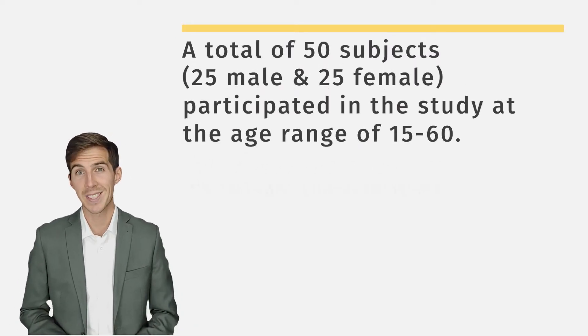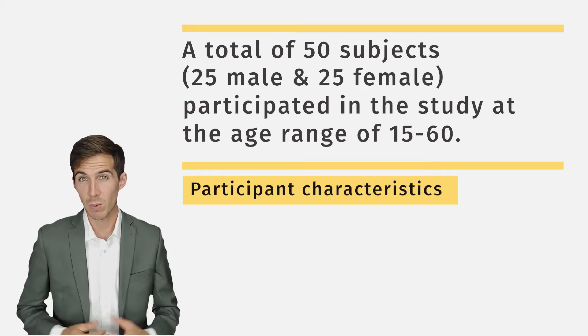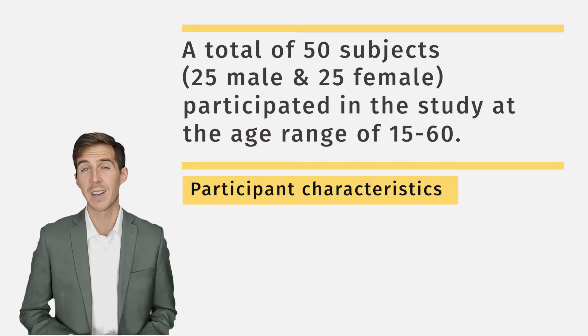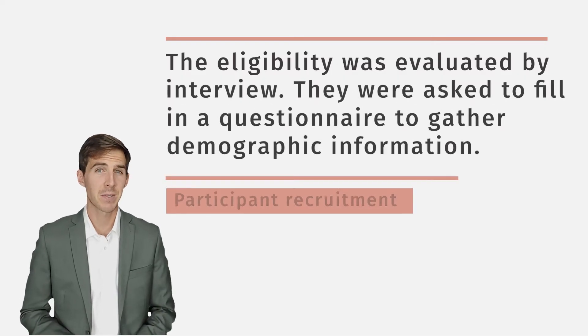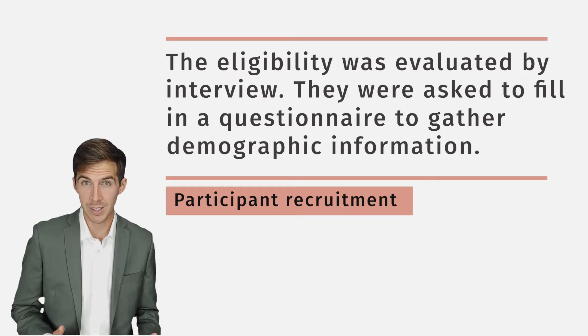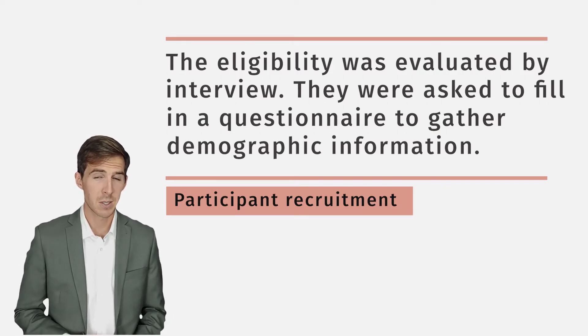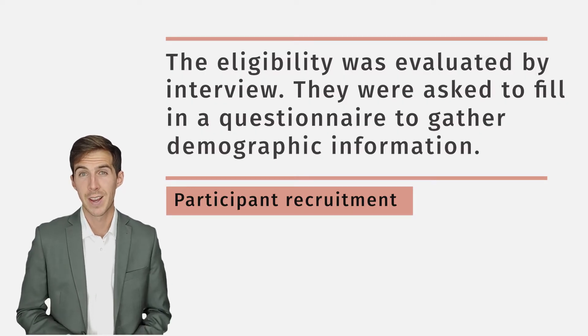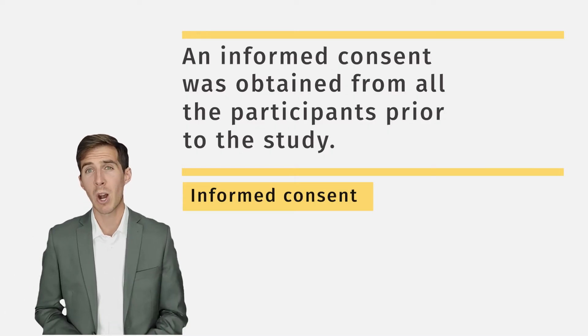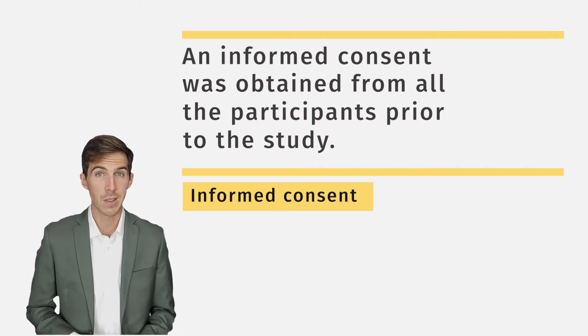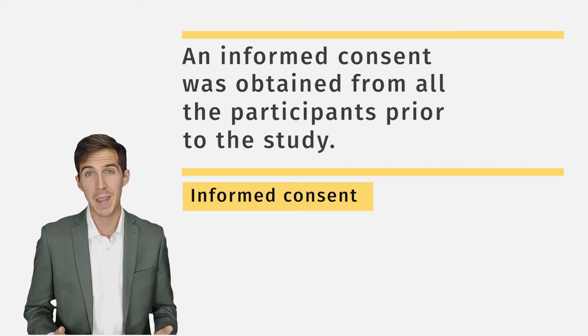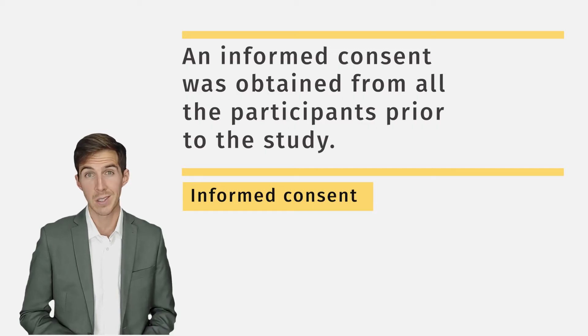Now let's detail the characteristics of the cohort, such as sample size, age, gender, etc. In our case, we recruited 50 subjects in the age range of 15 to 60. Let's provide some information about the recruitment procedure — in our case, there was a face-to-face interview to confirm eligibility, and eligible participants were asked to fill in a questionnaire to gather demographic information. An important part of recruitment is obtaining informed consent. Participants should be given all information about the trial, including benefits and risks, so they can make an informed decision about whether to participate.